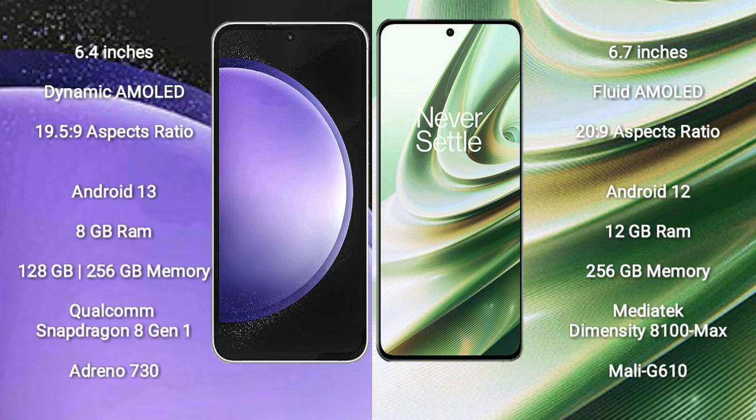Samsung Galaxy S23 FE runs on the Android 13 operating system. OnePlus 10R runs on the Android 12 operating system. Samsung Galaxy S23 FE comes with 8GB RAM and 128GB internal storage.